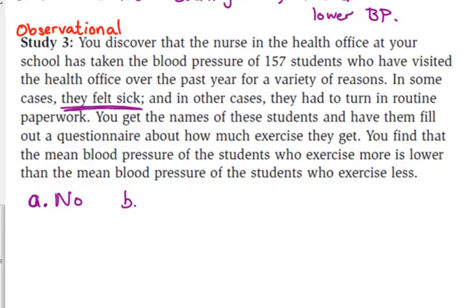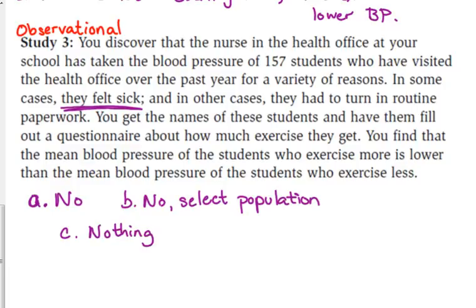Part B — can we generalize it? No, because we are looking at a select population: the students that visited the nurse's office. We're not looking at a random sample of everyone in the school. And what can we conclude? I don't think there is anything definitive we can conclude from this study, because there are too many variables going on. Some of these kids were sick. You're talking about just the kids that go to the nurse's office and their opinions about how much exercise they get. There are just too many variables to make a good conclusion from these results.